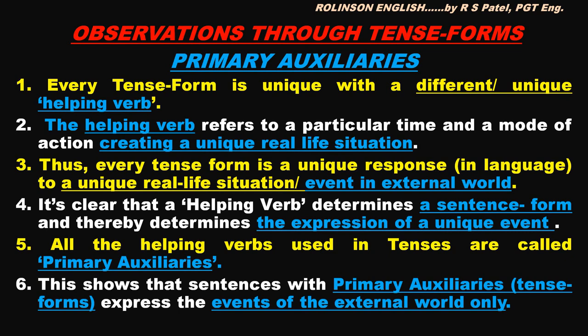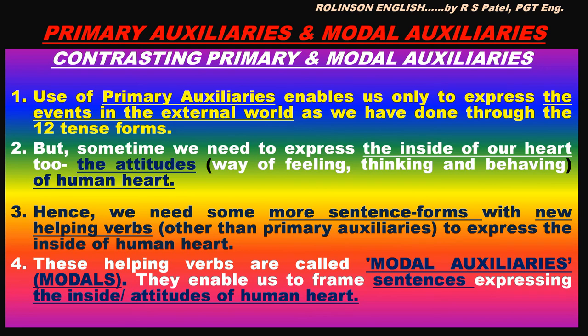All the helping verbs used in tenses are called primary auxiliaries — this is a collective name for them. This shows that sentences with primary auxiliaries, that is the tense forms, express the events of the external world only. Use of primary auxiliaries enables us only to express events in the external world, as we have done through the 12 tense forms.